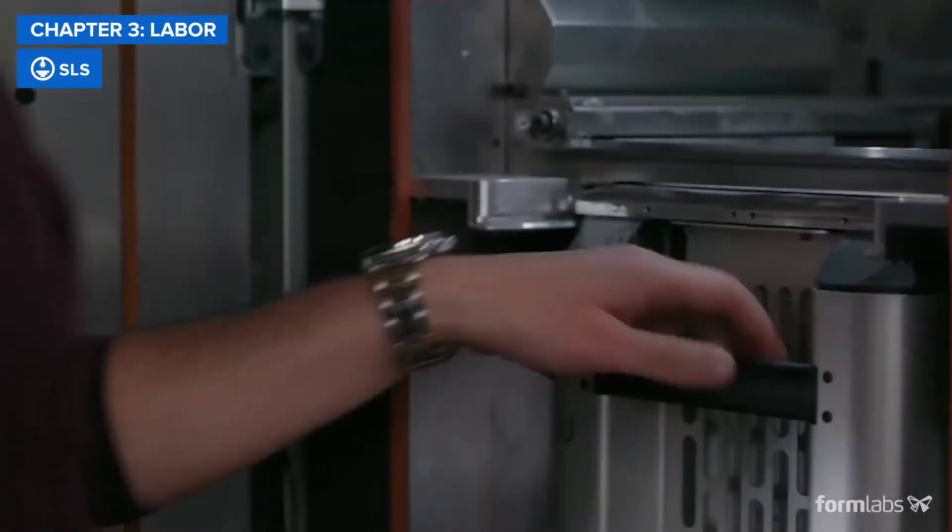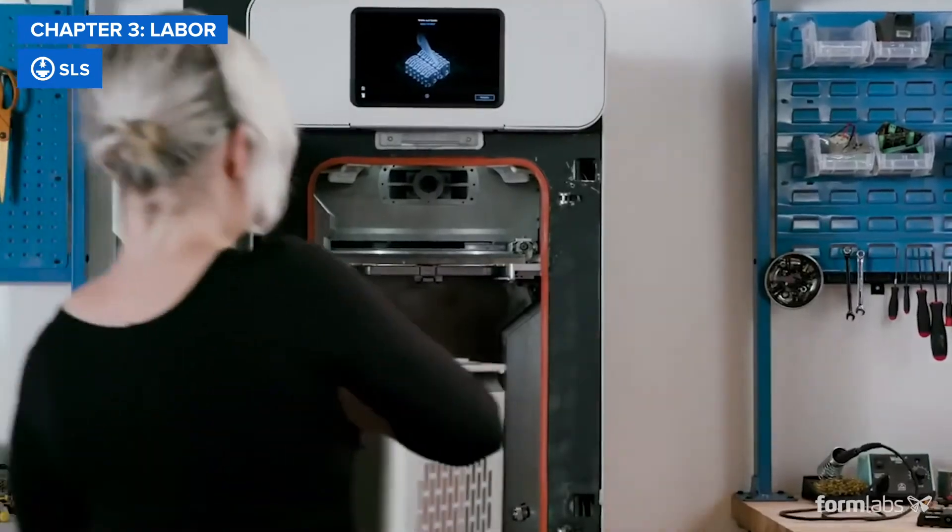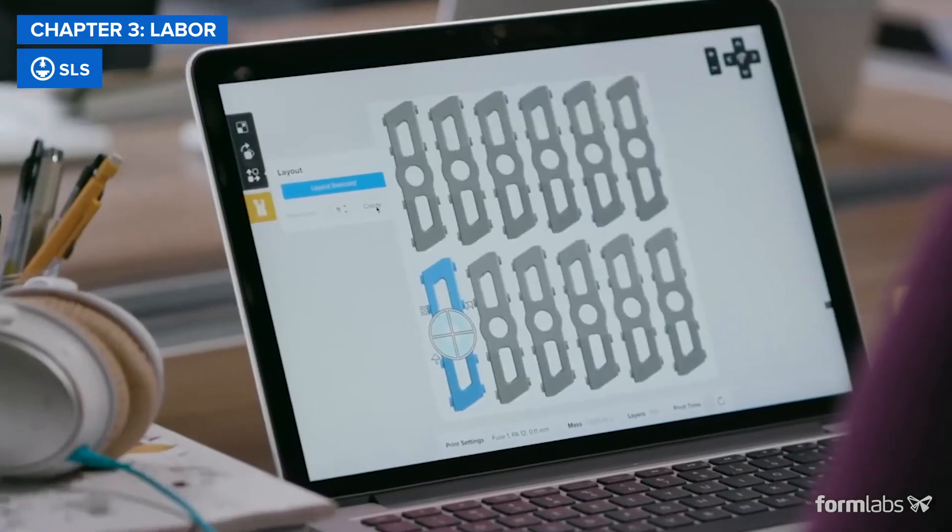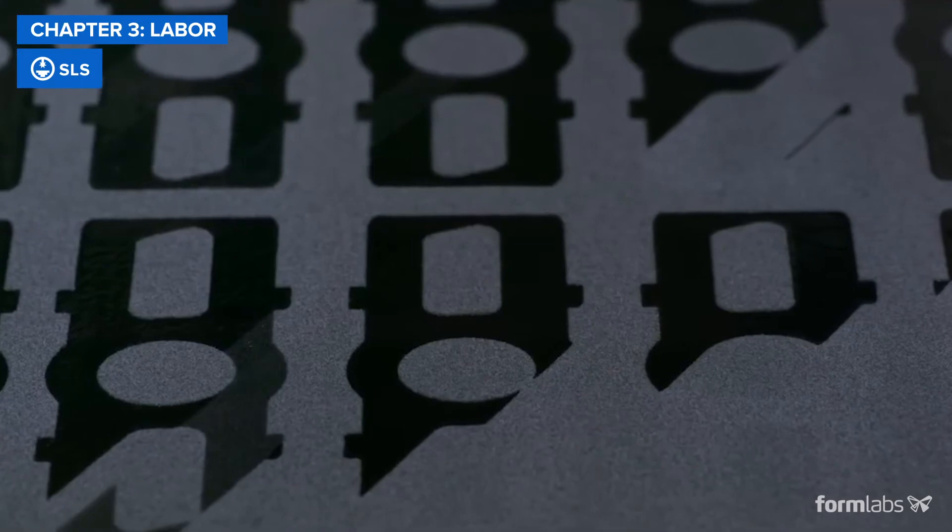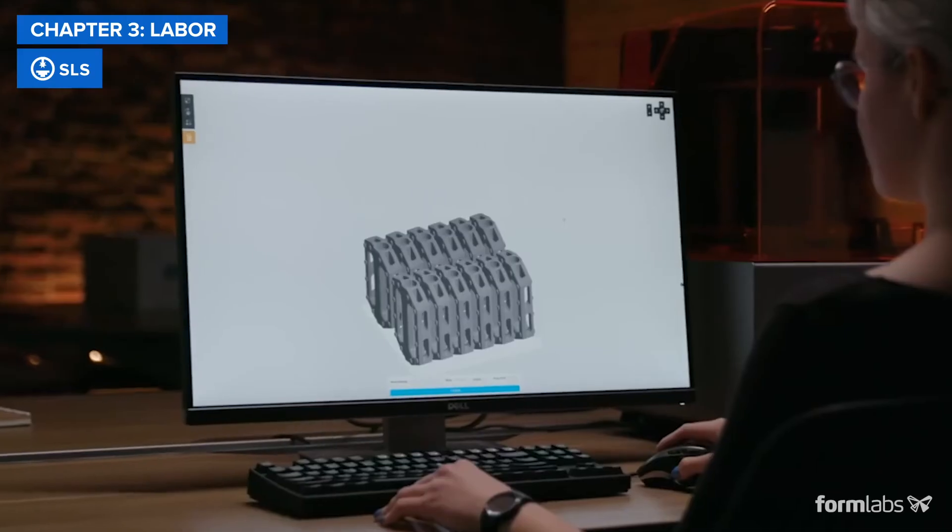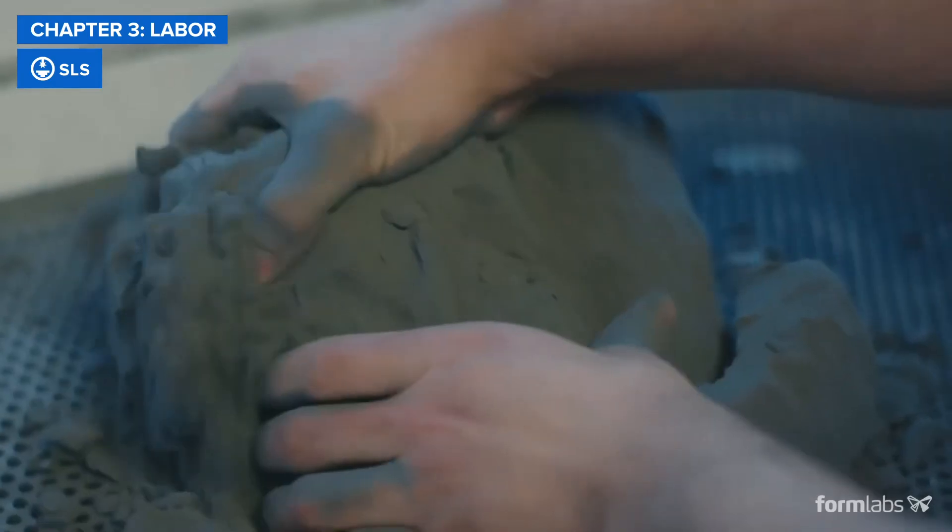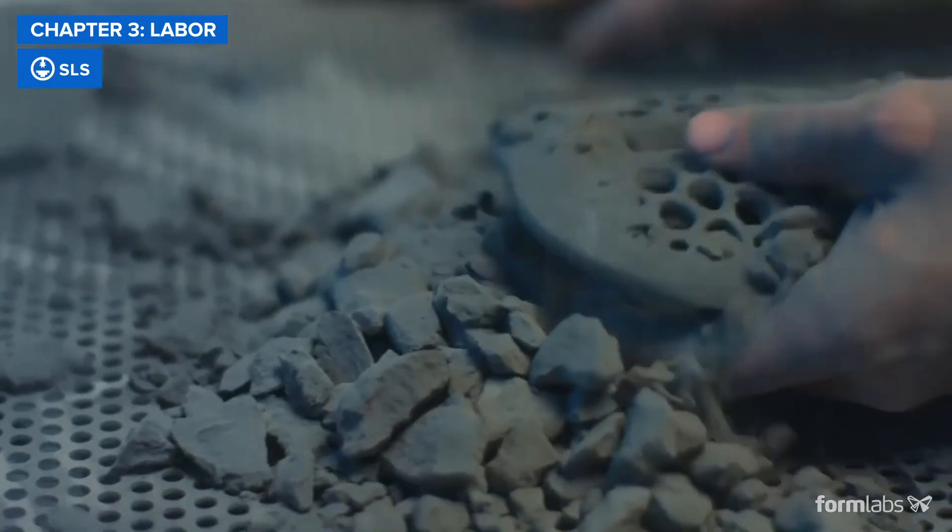SLS 3D printers require more setup time for handling the powder material and considerably more maintenance between prints, but that's normally divided among many parts in a single build. Because of this, post-processing SLS parts can be the least labor-intensive of the three processes when processing a full batch of parts. Parts just need to be removed from the powder that surrounds them and cleaned of the excess material.